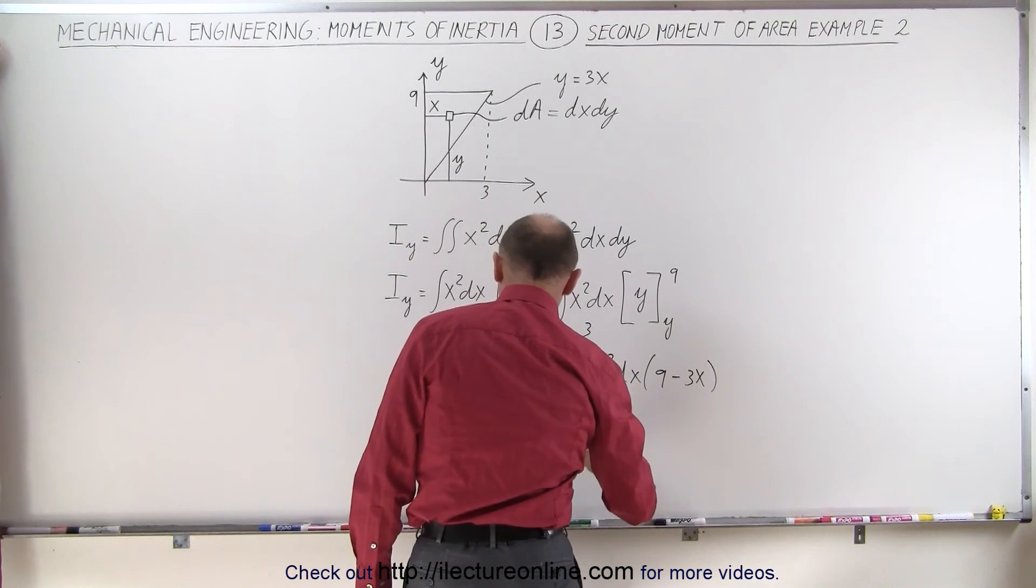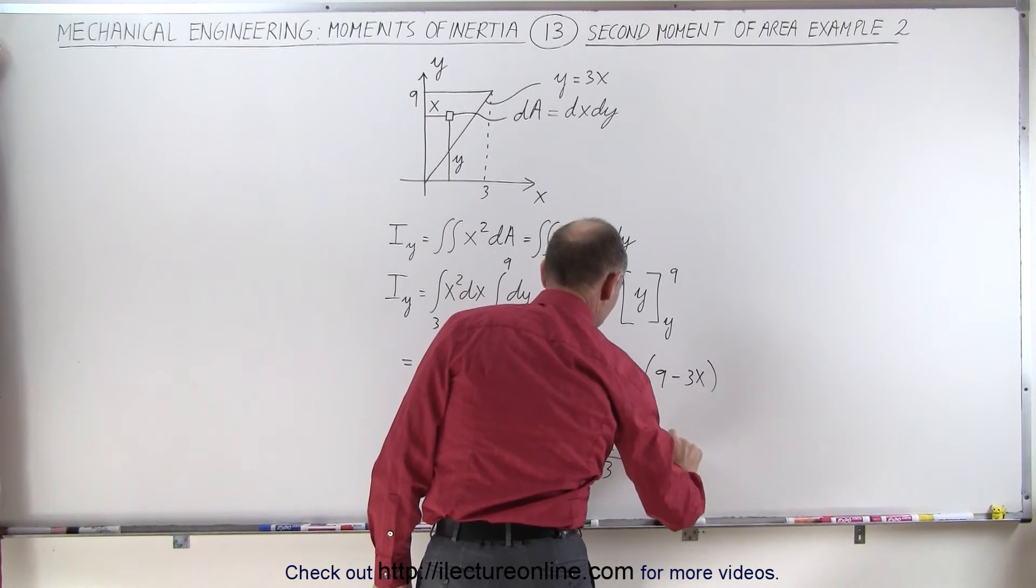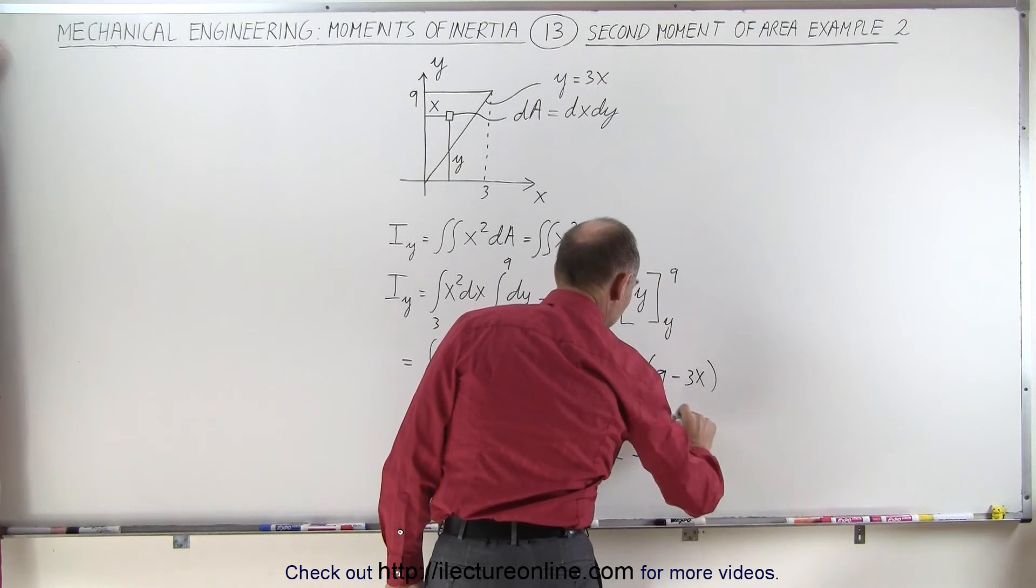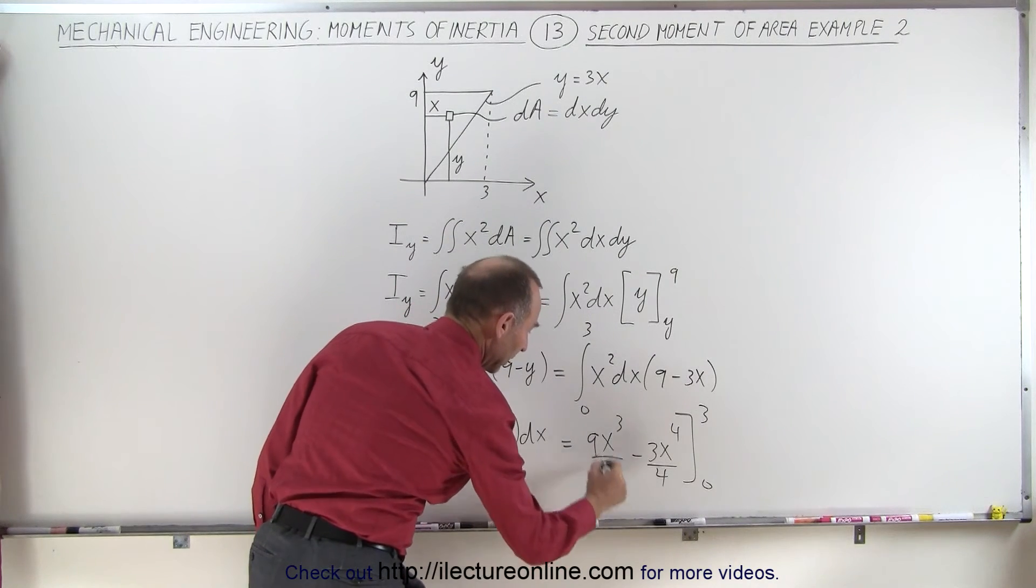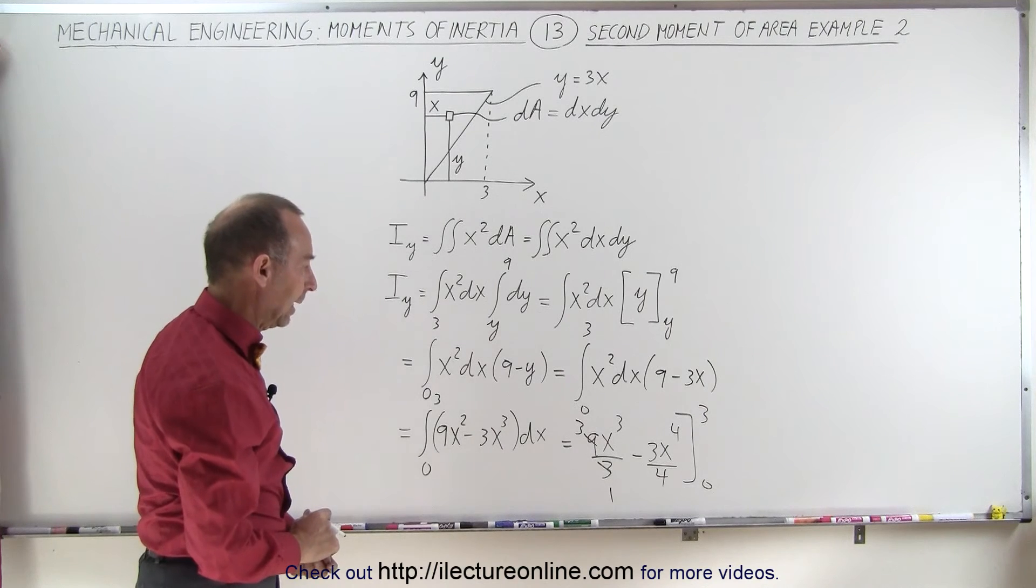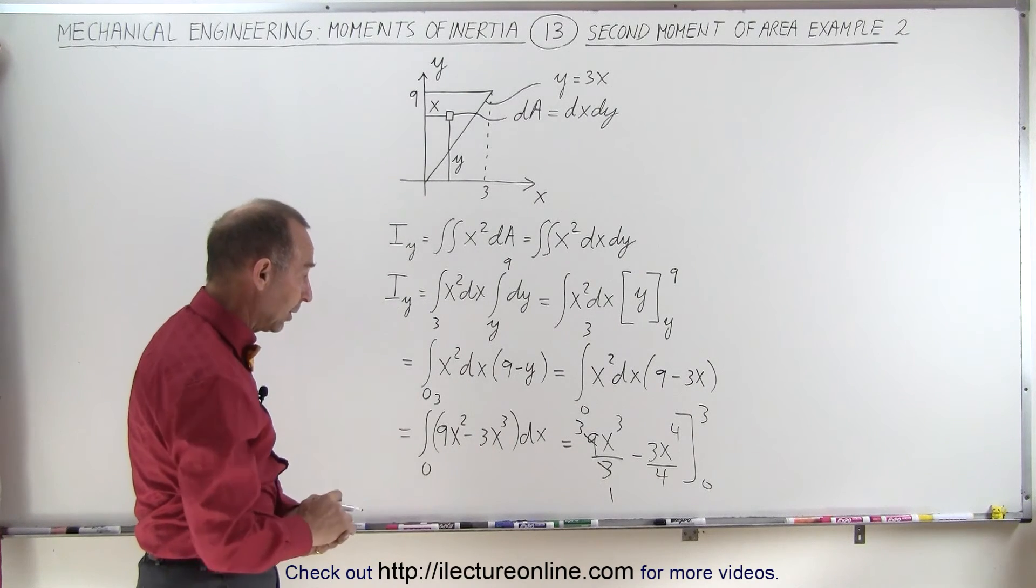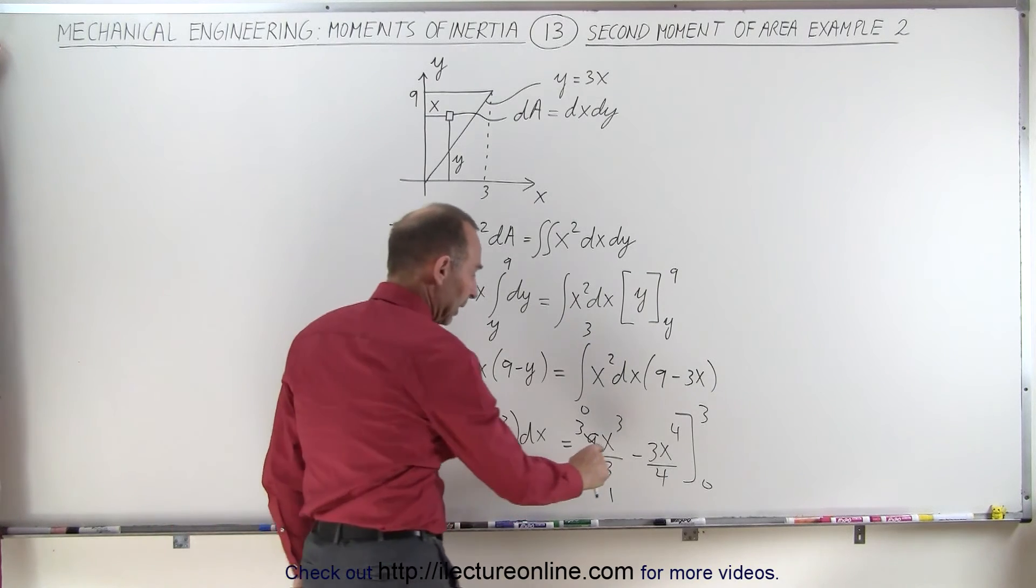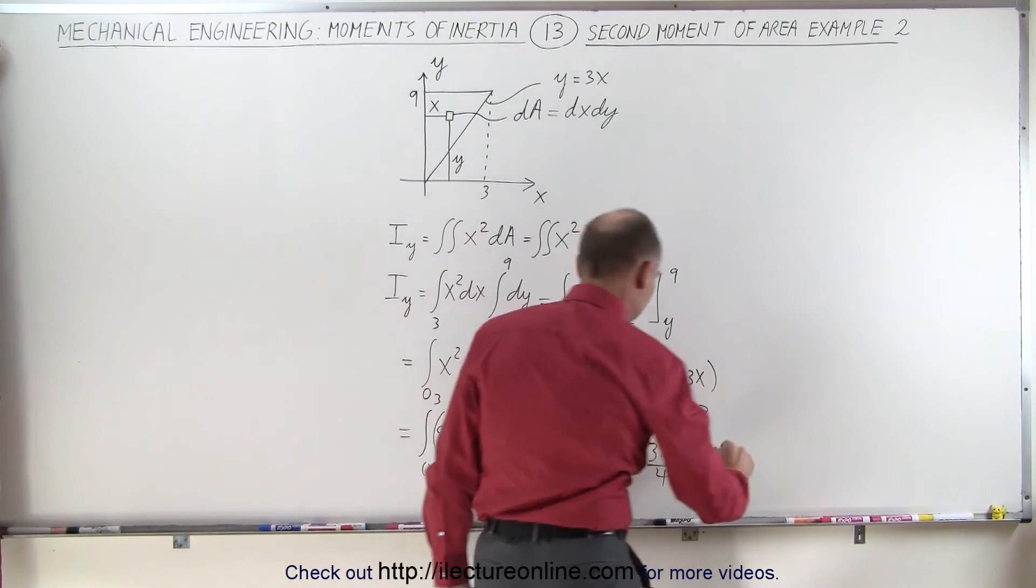This becomes equal to 9x cubed over 3 minus 3x to the 4th over 4, evaluated from 0 to 3. And notice that this 3 and this 9 simplify to 3 over 1. And when we plug in the lower limit we get nothing - we get zeros - we only need to plug in the upper limit. So we get 3 cubed times 3, which is 3 to the 4th power, which is 81.